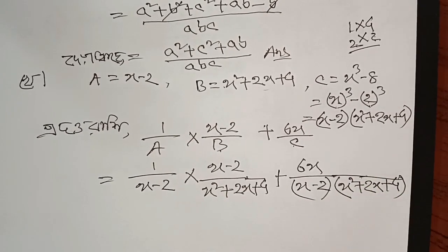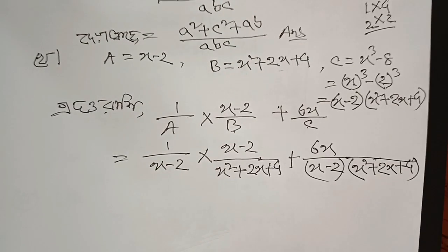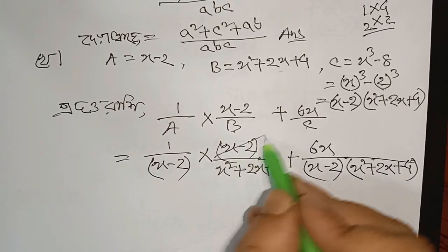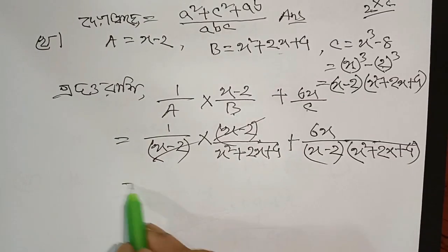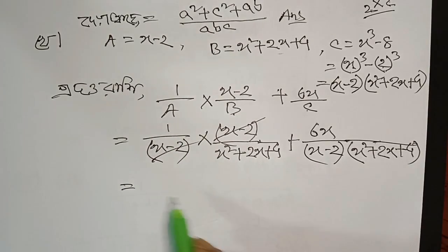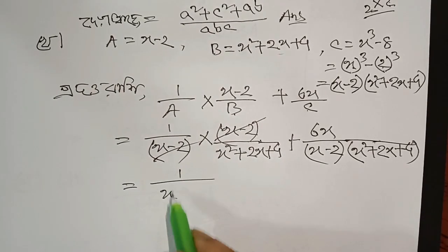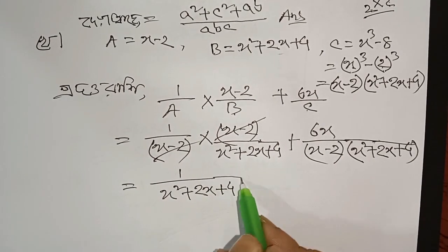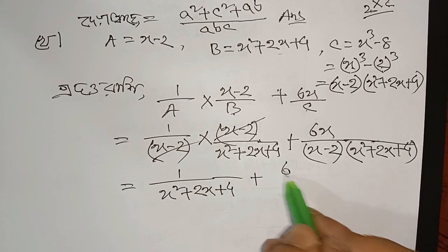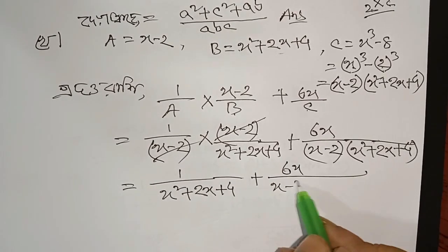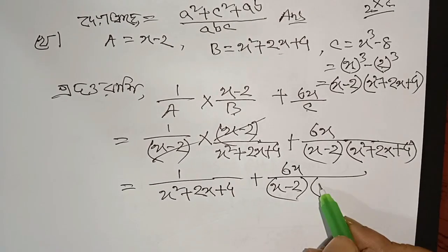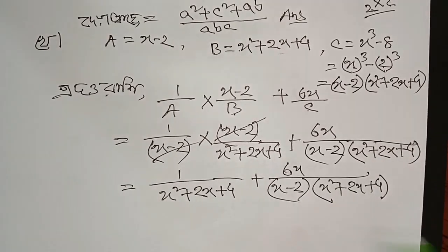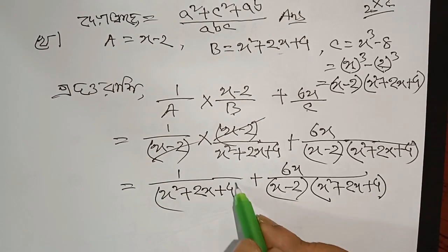So all the terms: the multiplication law is applied here, so with multiplication we will do the cancellation here. We open the bracket. Above that, x minus 2 we cancel. After cancelling, a fresh line is written — what remains is 1 by x square plus 2x plus 4, plus here we have 6x by x minus 2 into x square plus 2x plus 4.